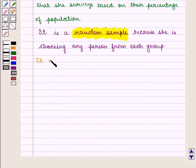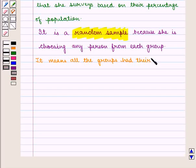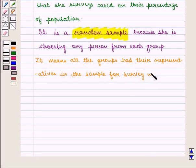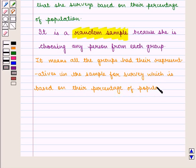It means all the groups have their representatives in the sample for survey, which is based on the percentage of population. So we can say it is the true representative of the population.